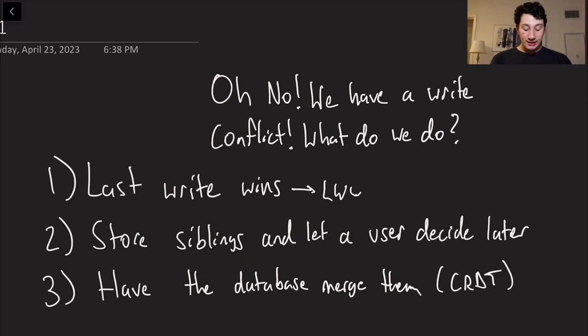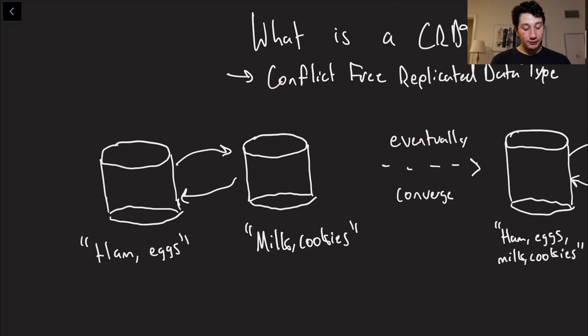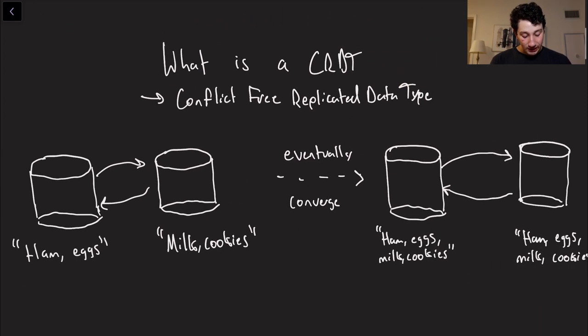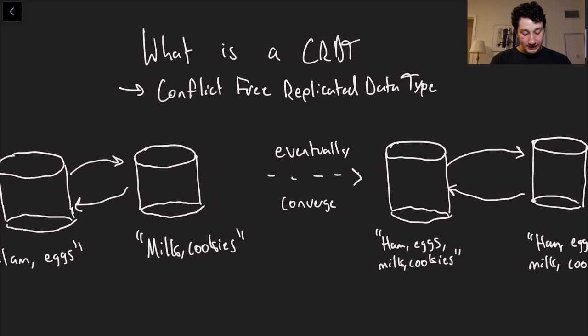A third option is to actually have the database merge them automatically. So my pen keeps not working here, and that is known as a CRDT or, of course, a conflict-free replicated data type. So what is actually the meaning of these things? Well, what is a CRDT?